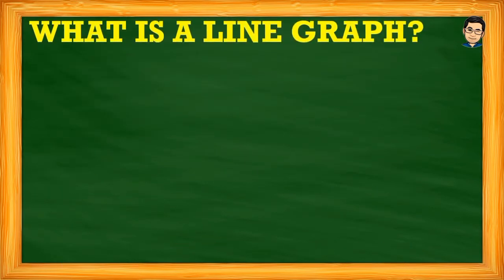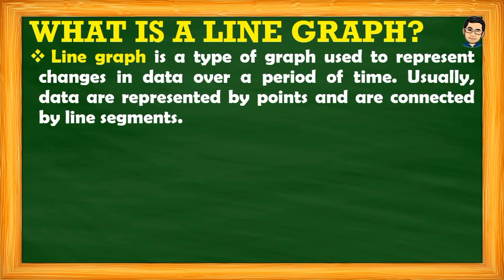Let us start our discussion by defining what a line graph is. A line graph is a type of graph used to represent changes in data over a period of time. The word 'changes' means pagbabago. Data are represented by points, and these points are connected by line segments — line segments being those with two endpoints connecting the two points.